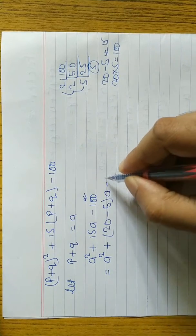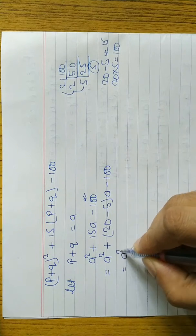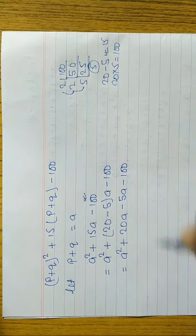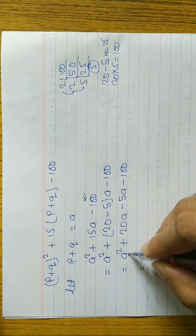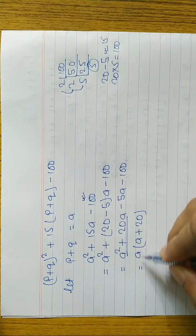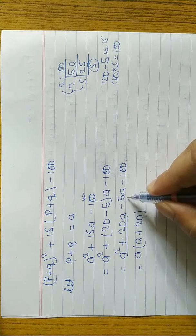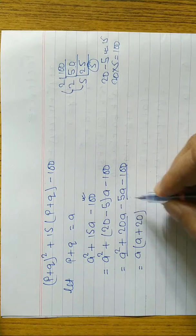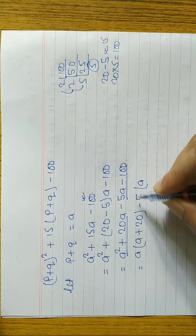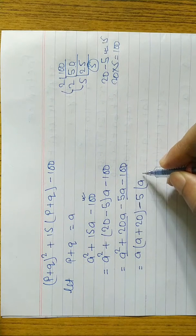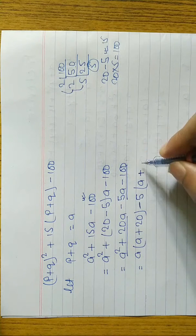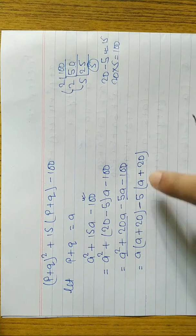We write a² + (20 - 5)a - 100. Opening the bracket: a² + 20a - 5a - 100. From the first two terms, a is common, remaining (a + 20). From the last two terms, -5 is common. When minus is common, we change the sign: remaining is (a + 20). Keep in mind that a + 20 and a + 20 must always be the same.